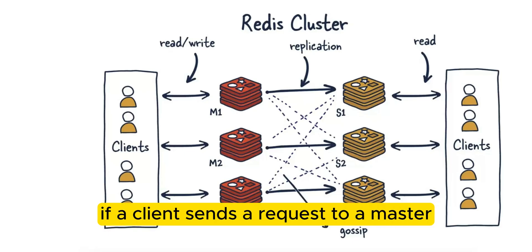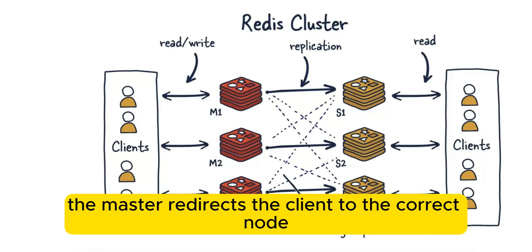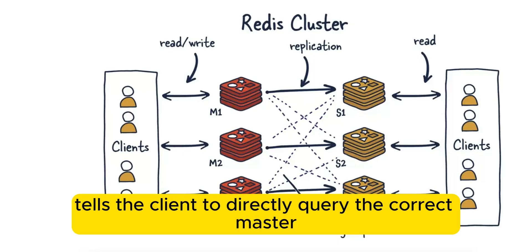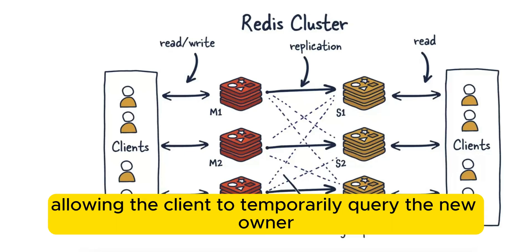If a client sends a request to a master responsible for a slot it does not own, the master redirects the client to the correct node using MOVED and ASK responses. MOVED tells the client to directly query the correct master, and ASK is used when the slot is in transition, allowing the client to temporarily query the new owner.